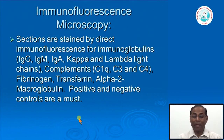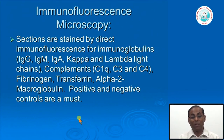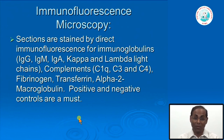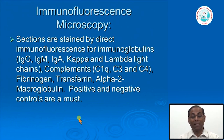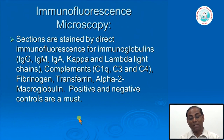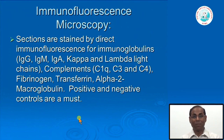For immunofluorescence microscopy, we look for deposits of IgG, IgM, and IgA, and assess whether they are monoclonal or polyclonal using kappa and lambda antibodies. We also assess activation of the classical or alternative complement pathway—for the classical pathway we test C1q, and for the alternative pathway we test C3. Sometimes C4 is tested but not routinely. This helps us understand how the complement system is being activated.